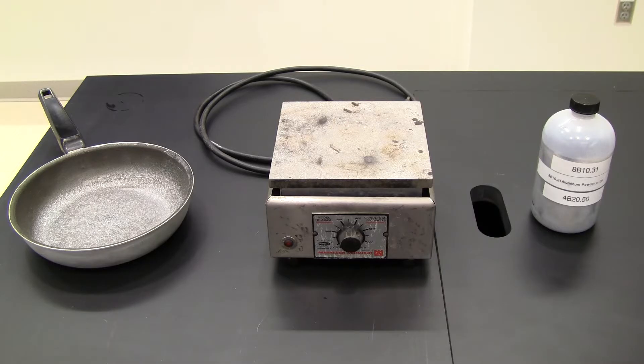We can easily illustrate convection with the following equipment: hot plate, small pan, silicone oil, and aluminum powder.